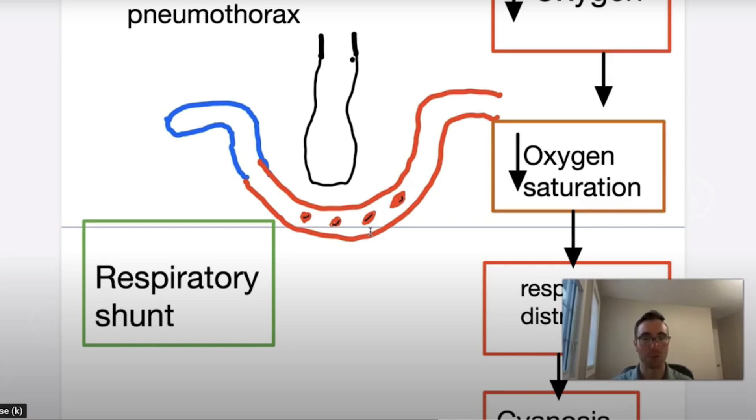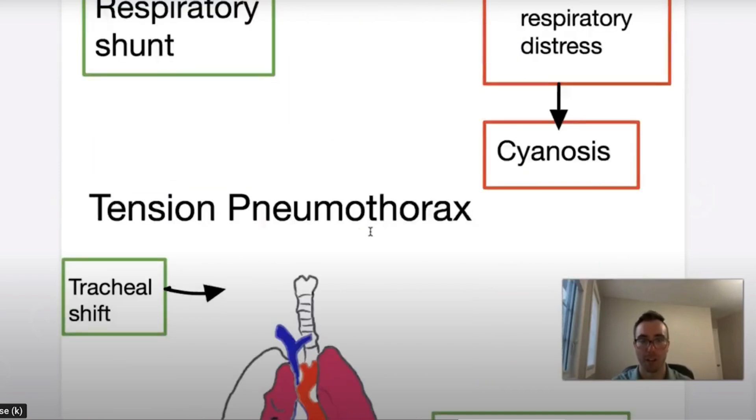So overall tension pneumothorax leads to a respiratory shunt if they just have a tension pneumothorax alone, because you have normal amounts of blood flow. However, you have a reduction amount of oxygen because you need equal amounts of blood flow and oxygenation to maintain our homeostasis. But if you have an alteration one or the other, that can lead to detrimental effects. So you obviously have a reduction in ventilation and oxygenation, and this leads to respiratory shunt.